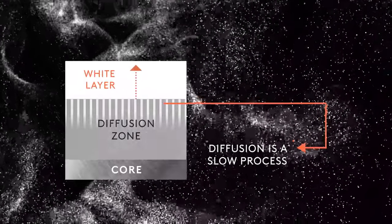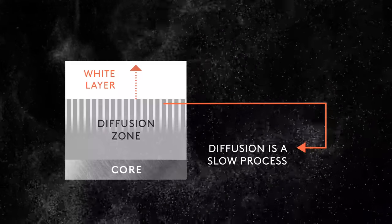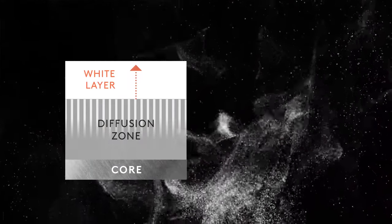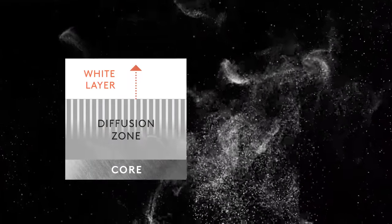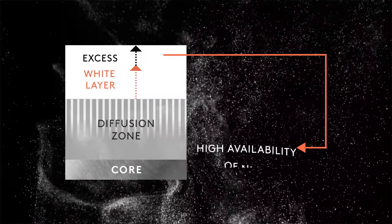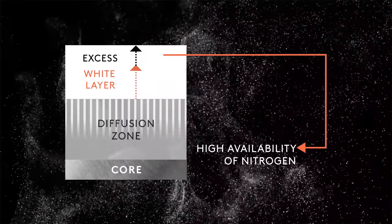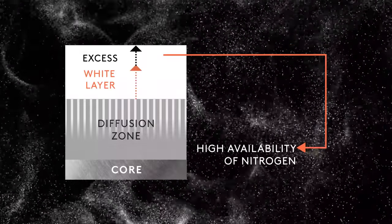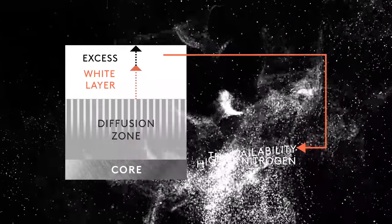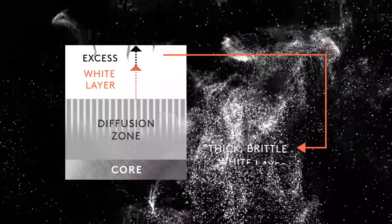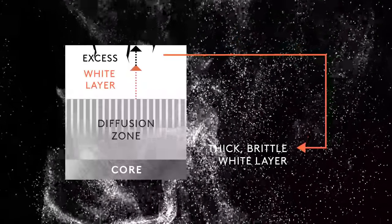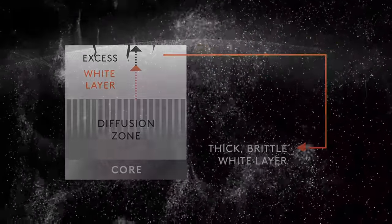If one continues the process for too long to obtain a deeper case — a thicker diffusion layer — this high flow of ammonia becomes excessive. A high flow of ammonia signifies a high availability of nitrogen. Nitrogen starts piling up on the surface, creating a thick brittle white layer without mechanical properties. It has to be removed, ground away.